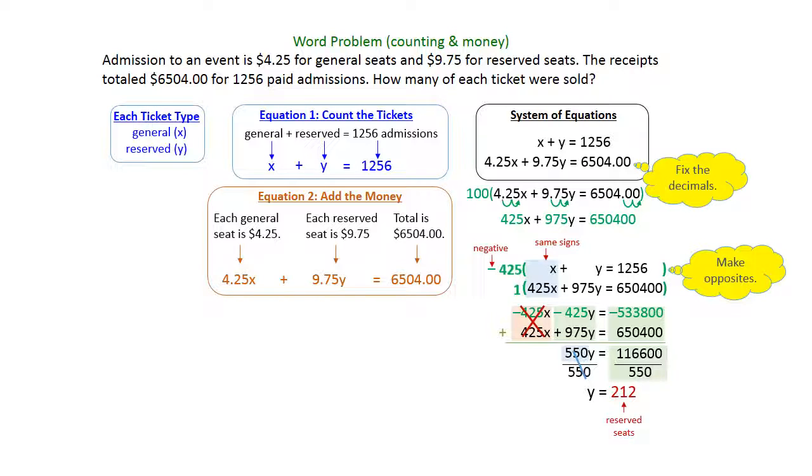Y stood for our reserved seats, so that means we sold 212 reserved seats. Now you can take the 212 and plug it in anywhere you want. I'm just going to take the original counting the tickets equation and put the 212 in for y. That gives us x plus 212 equals 1,256, and you just have to subtract the 212. When you do that you get x equals 1,044, and that's the number of general admission seats that we sold. So we sold 212 reserved seats and 1,044 general seats.